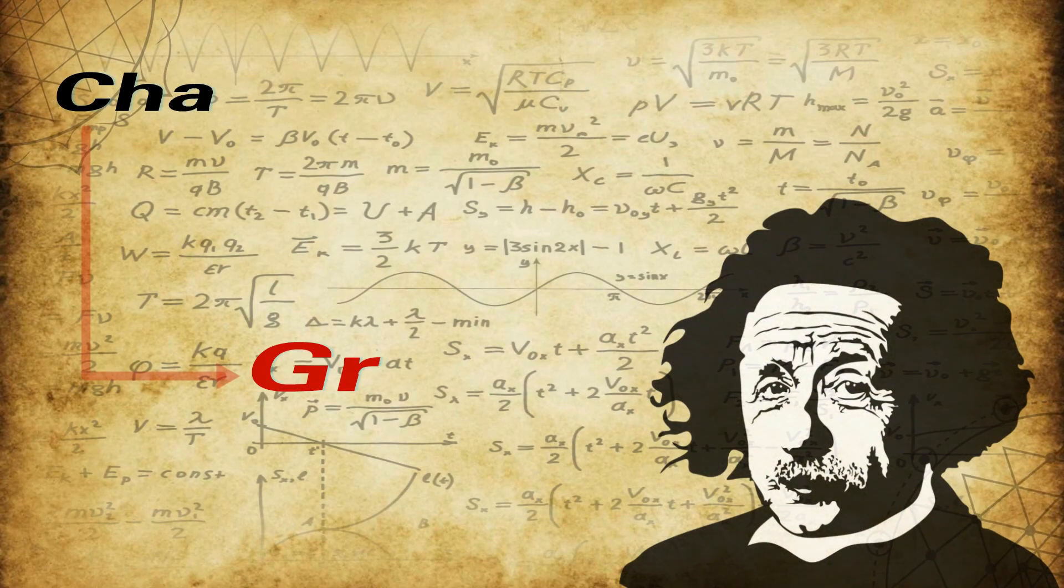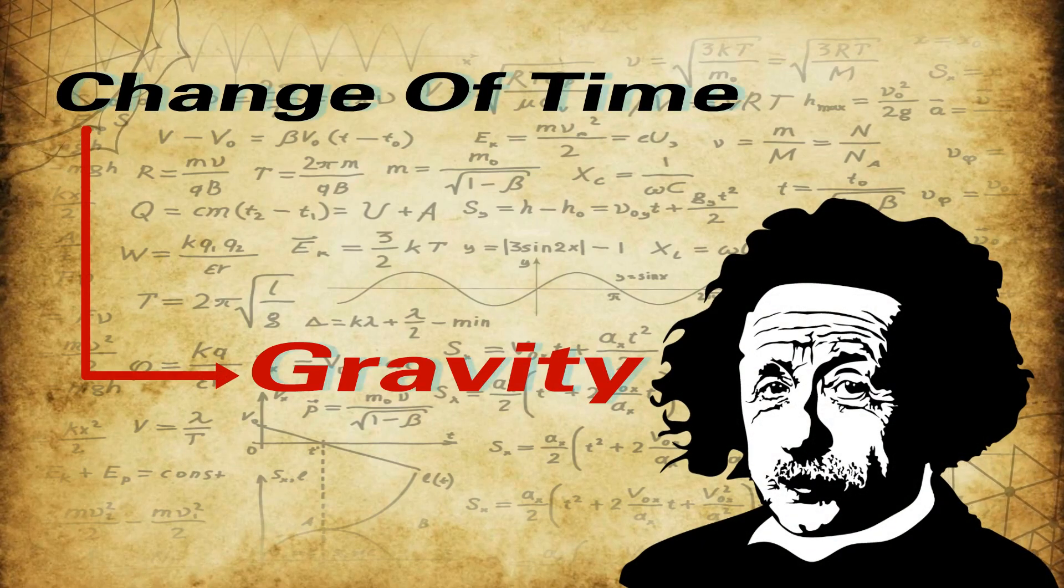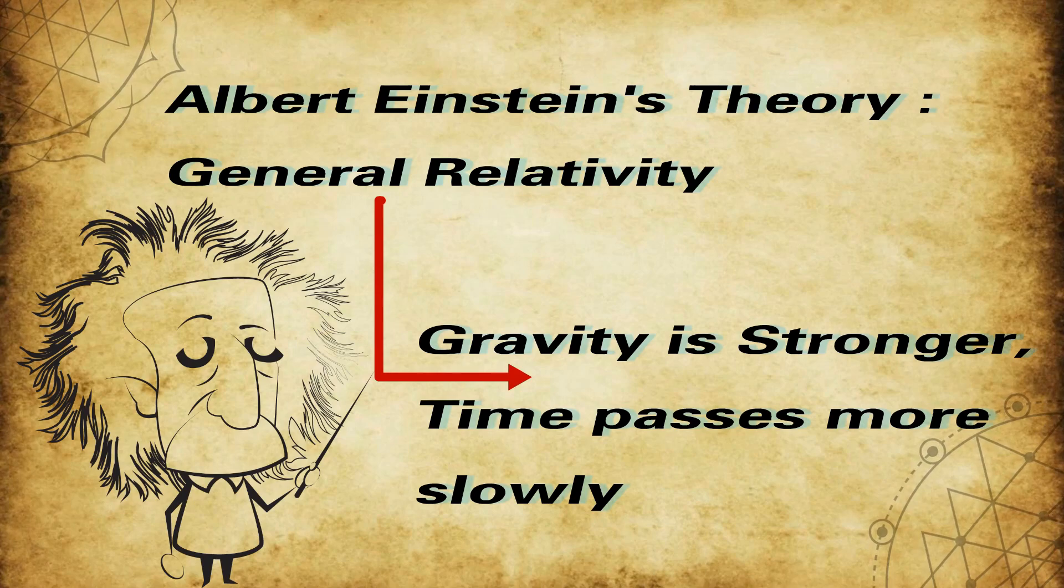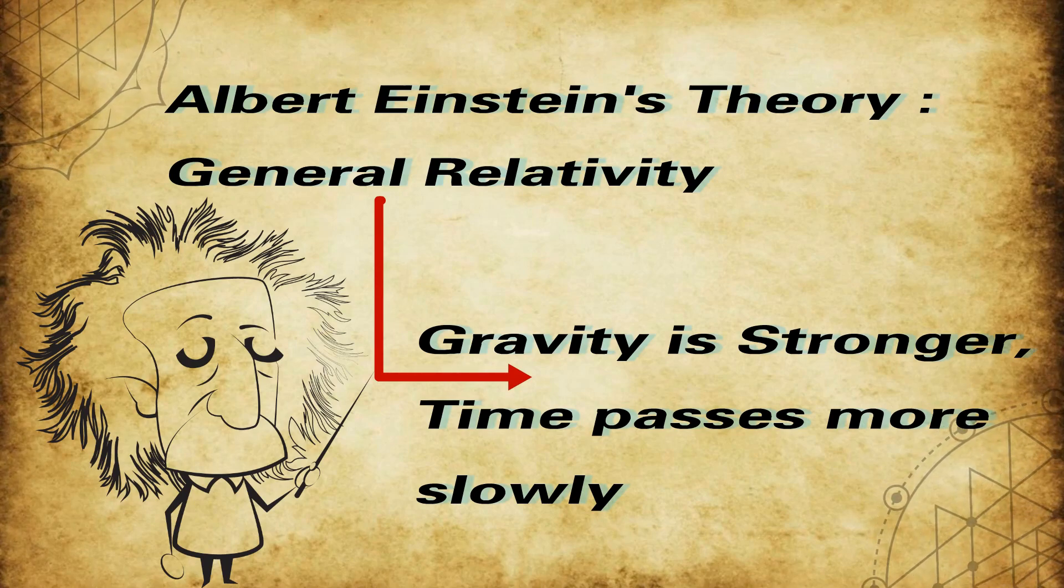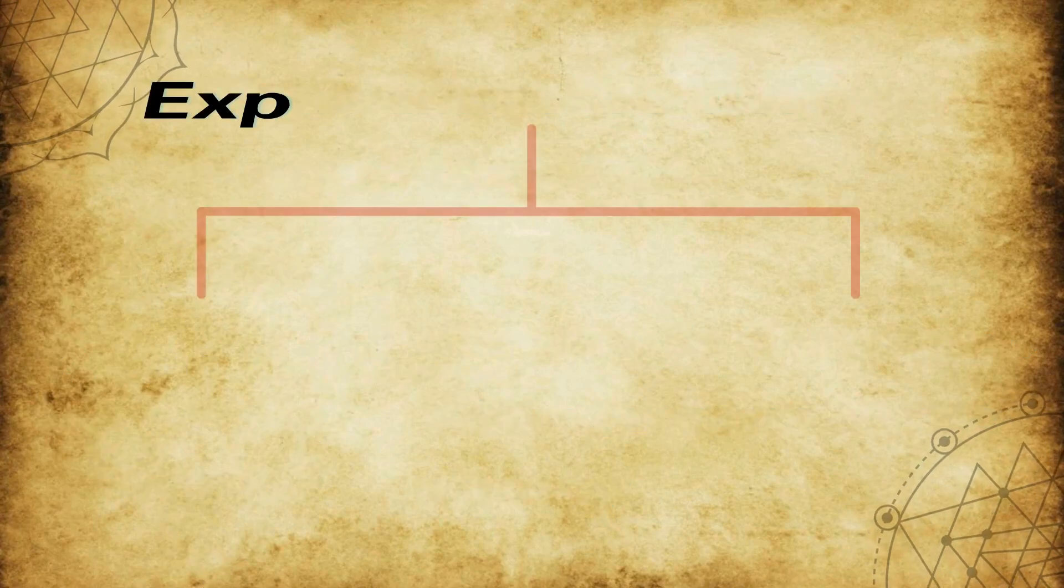I know some of you think this is complete myth. Please understand, change of time depends on gravity. Let's take Albert Einstein's theory. Albert Einstein's theory of general relativity predicts that where gravity is stronger, time passes more slowly.